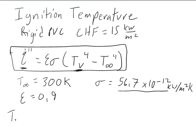So we can say Tv is equal to T ignition, which is equal to Q dot double prime divided by sigma epsilon plus T infinity to the fourth, all to the one-fourth power.